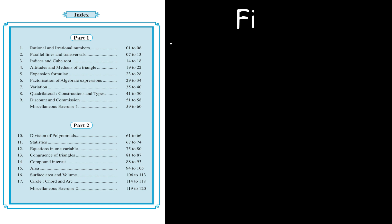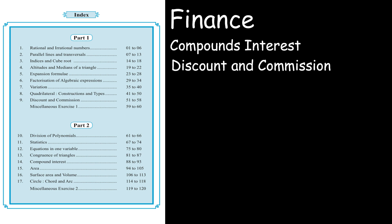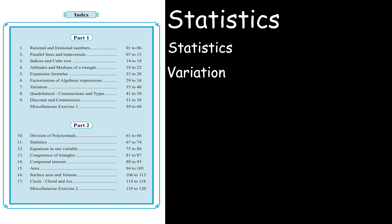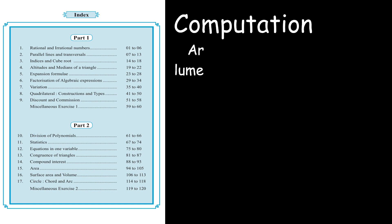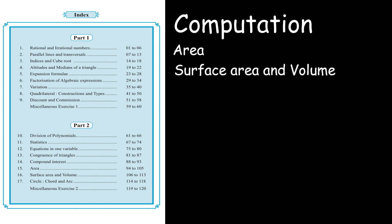In the case of compound interest, discount and commissions are the chapters of finance. Chapters like statistics and variations come under the category of statistics. Area, surface area and volume are the chapters of computation. That's it for this video. Welcome to the 8th standard. Work smartly.